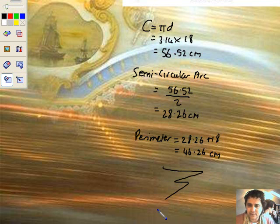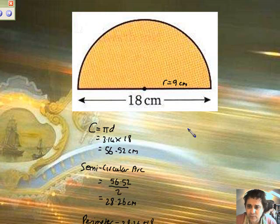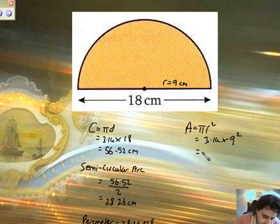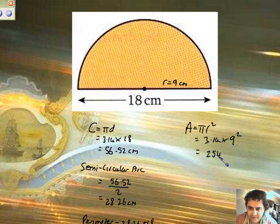Now area, dead easy. You know the area of a circle. Let's quote the formula. A equals pi times radius squared, which equals 3.14 times 9, remember? 9 squared, not 18 squared. Let's get some marks. 3.14 times 9 times 9, bam. We have got 254.34 centimetres squares worth of area for the whole circle.